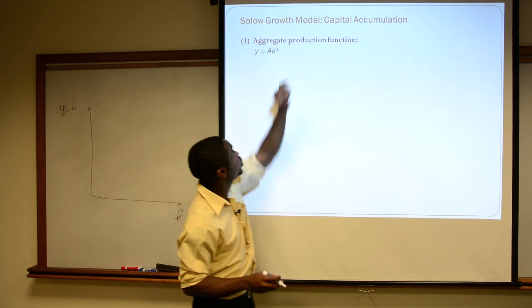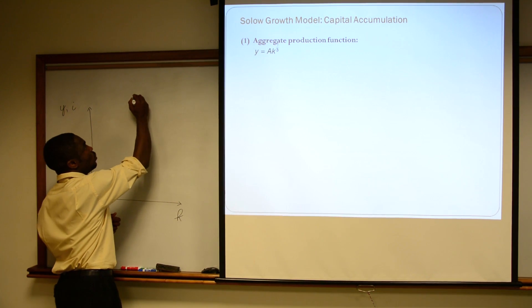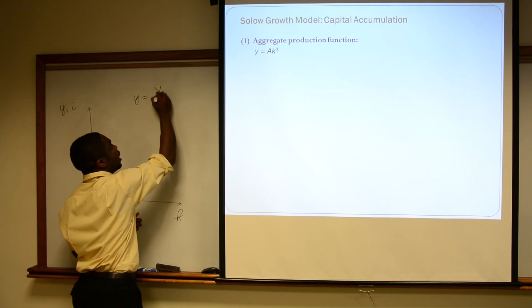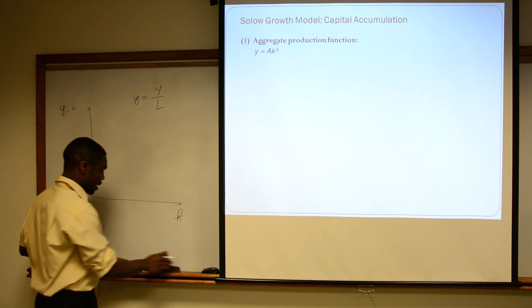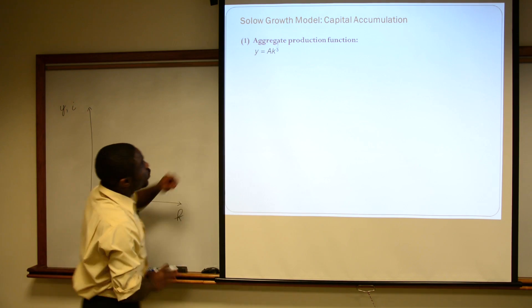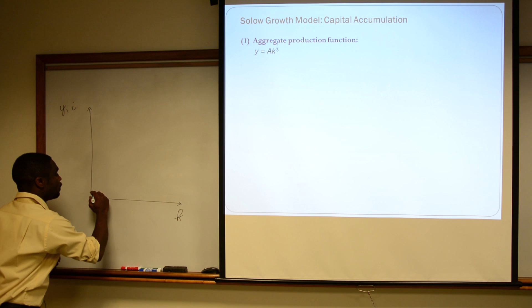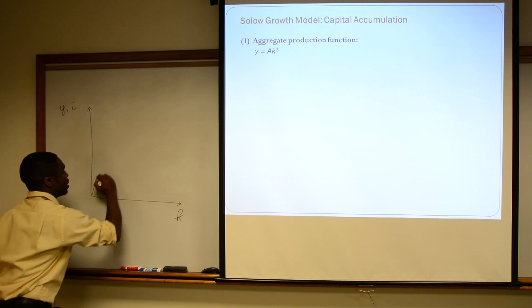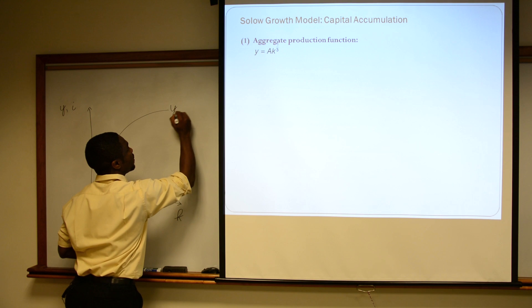Labor doesn't show up here because, as we said before, we're thinking about Y in terms of Y divided by L — the L is normalized. So we can draw a representative graph that looks something like that: Y is equal to A times K raised to the one third.